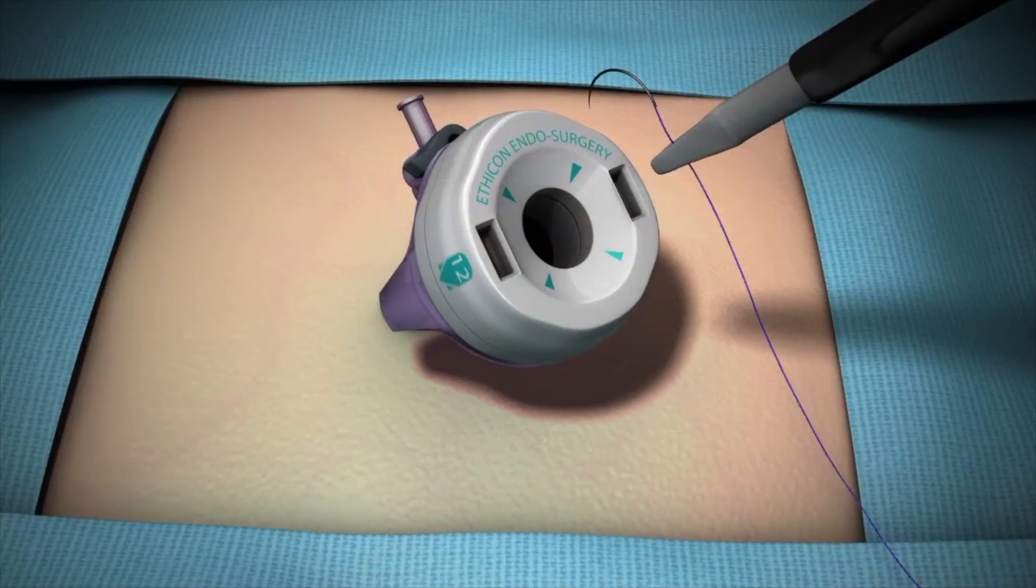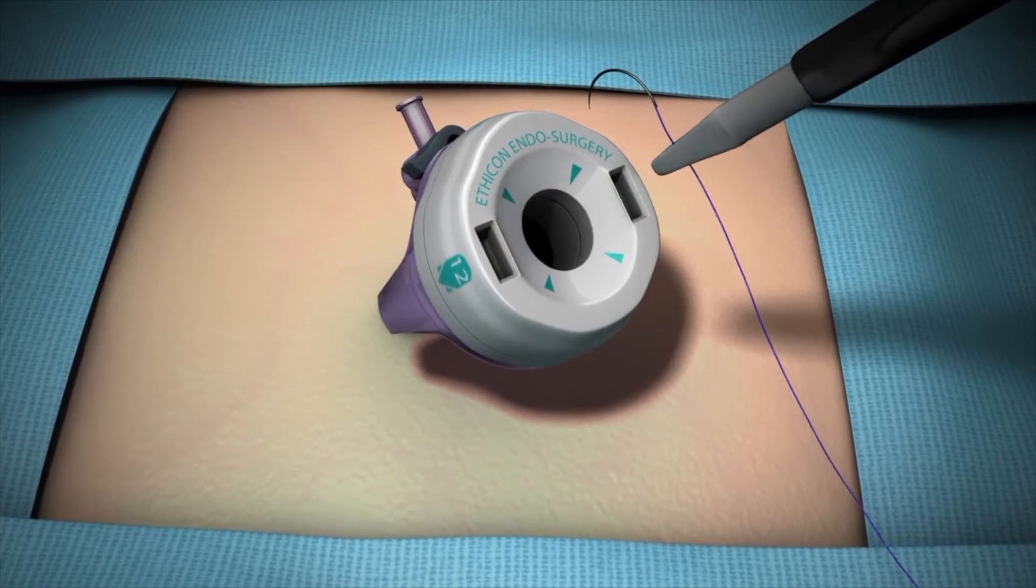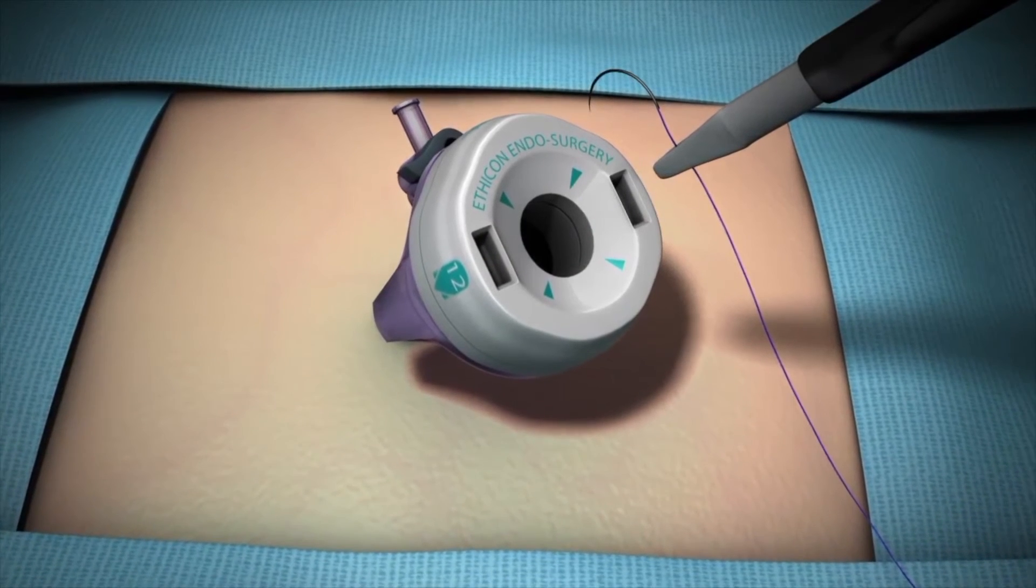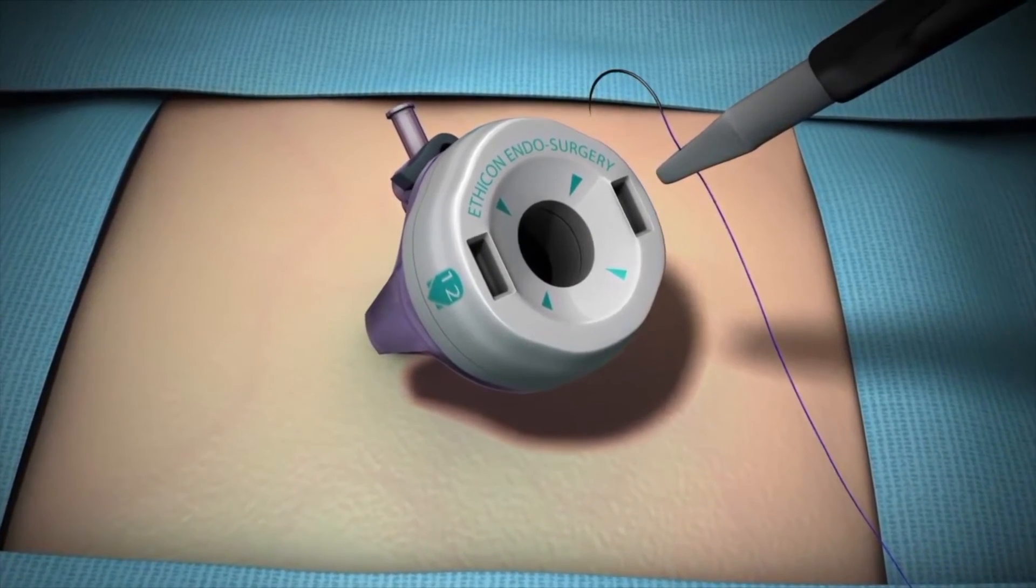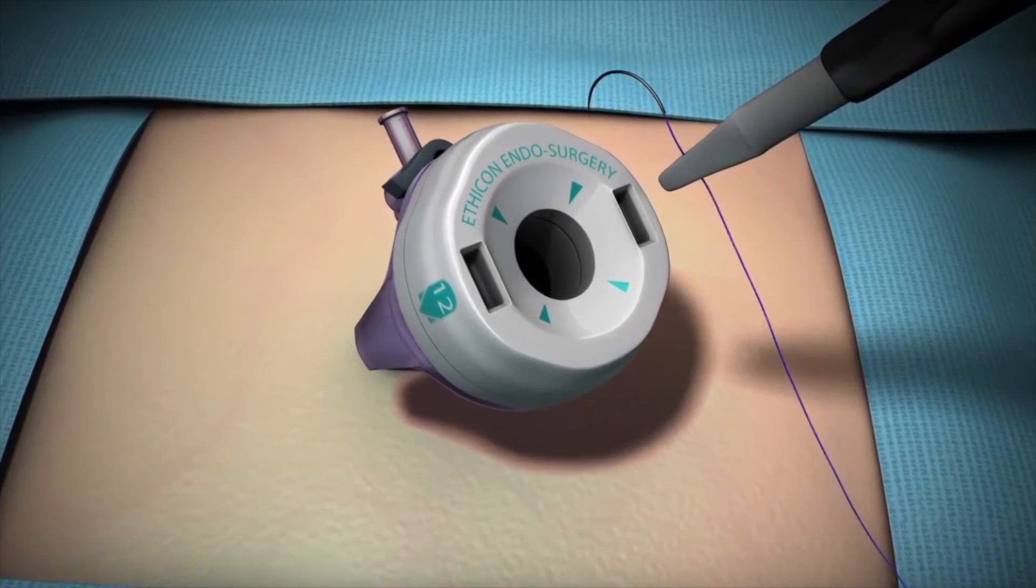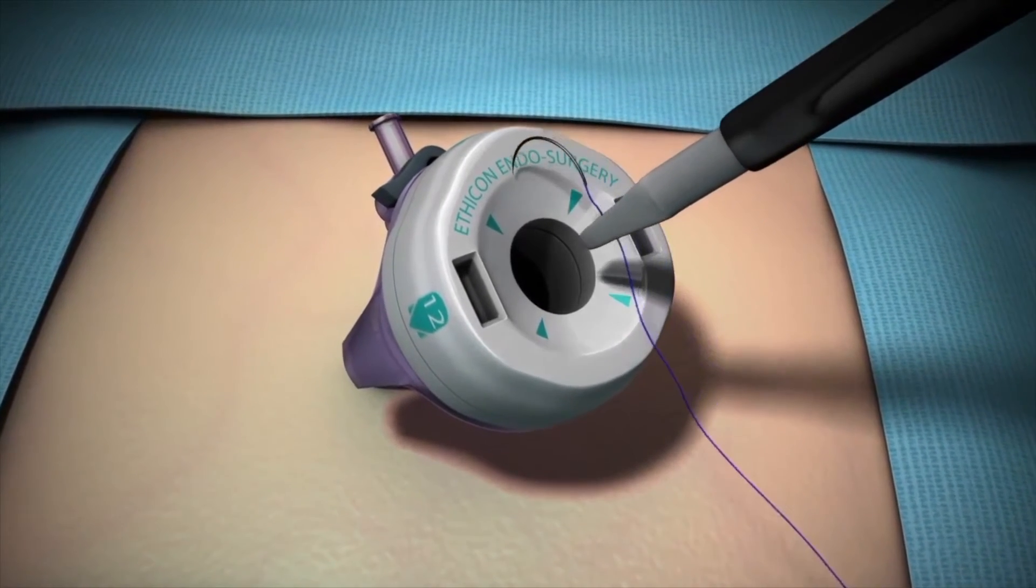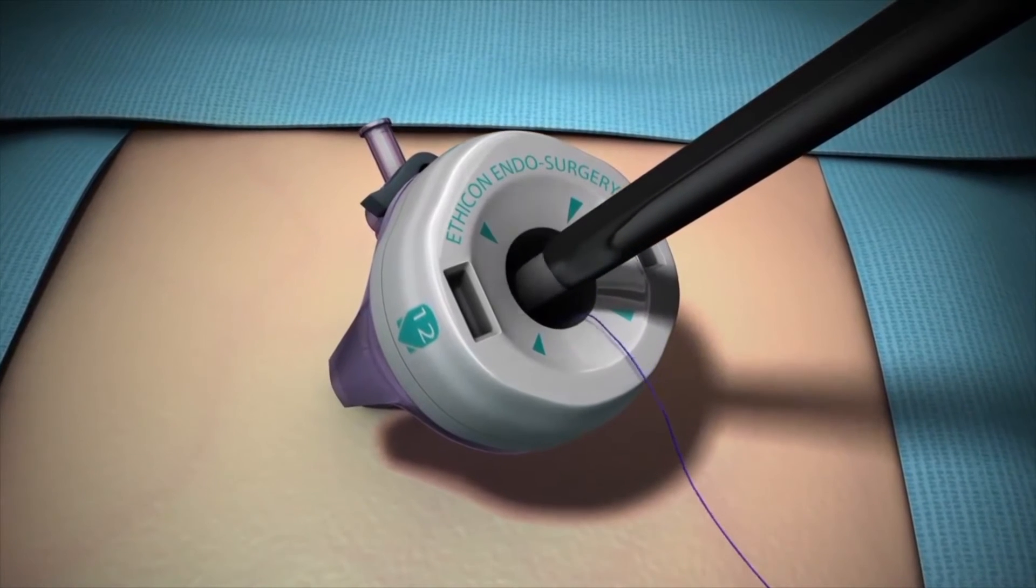To use the Stratafix Spiral Devices in a laparoscopic procedure, grasp the leader zone of the device, located approximately one to two centimeters from the needle's swage. Using the needle holder, insert the Stratafix Spiral Devices through the trocar.